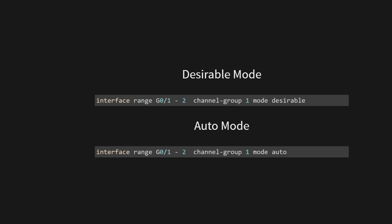With PAGP, we can set ports to desirable or auto mode. The desirable mode actively tries to form an EtherChannel with a compatible partner, while the auto mode waits for the other side to initiate the negotiation. PAGP dynamically manages the EtherChannel links. To configure an EtherChannel using PAGP in desirable mode, this command configures two Gigabit Ethernet interfaces — GigabitEthernet 0/1 and GigabitEthernet 0/2 — grouping them into a port channel interface using channel group 1.